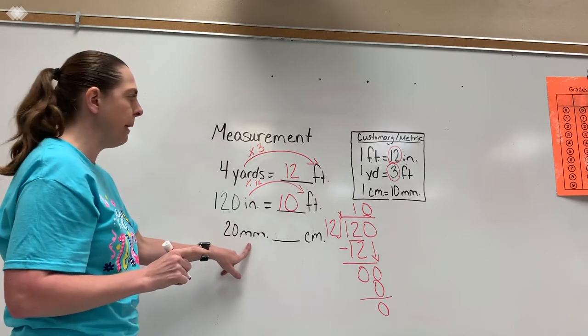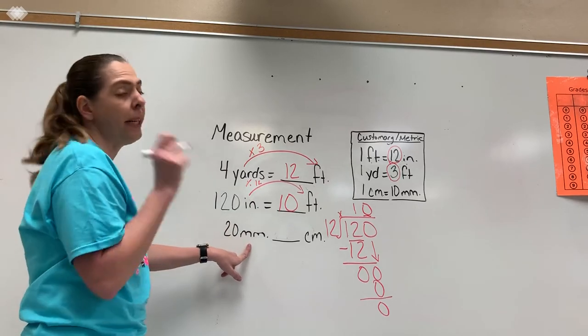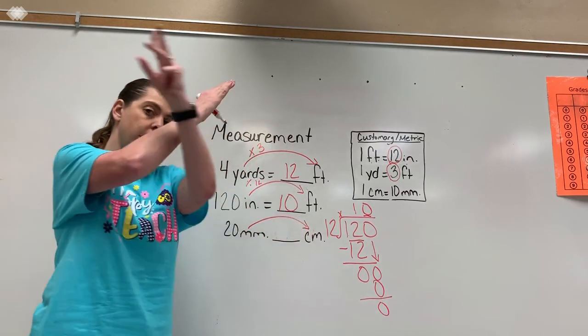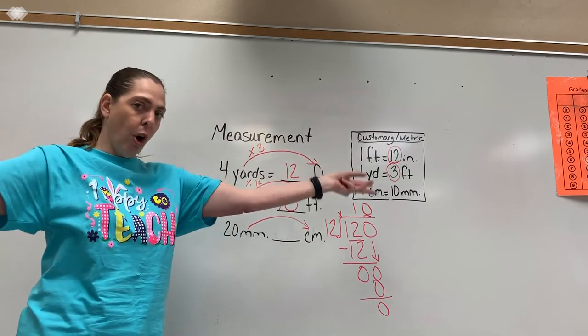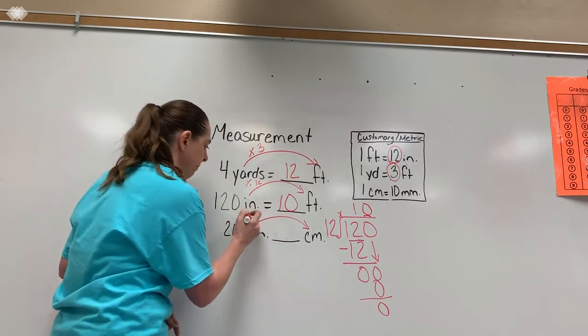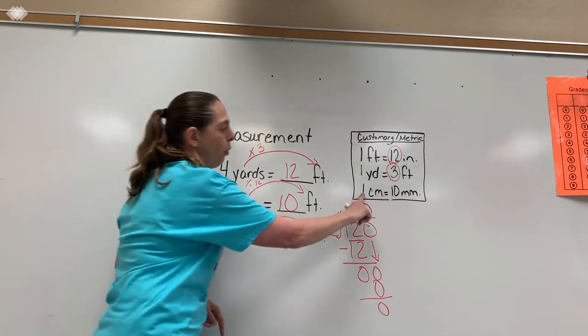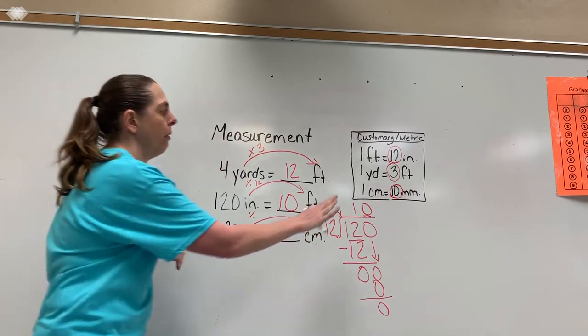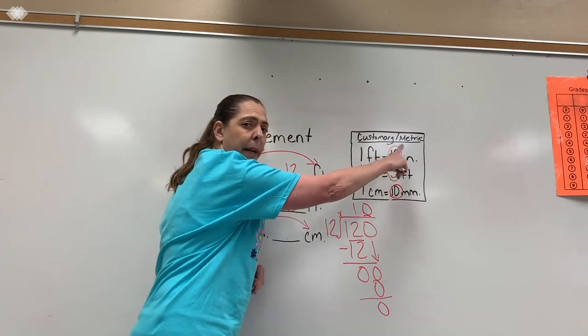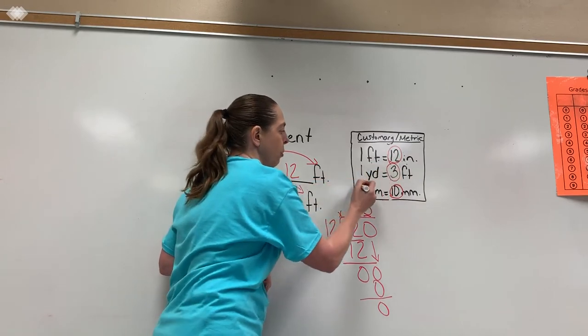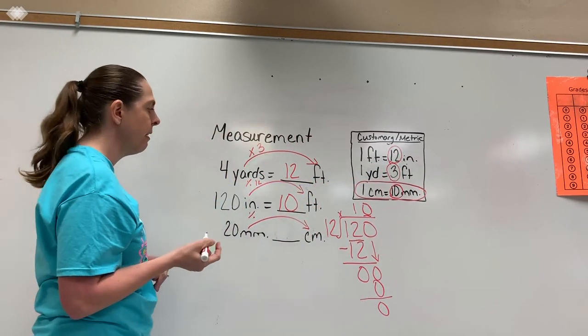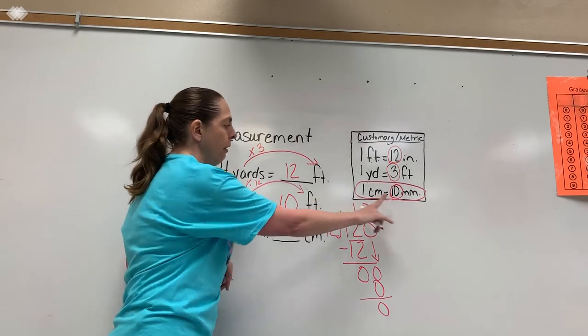Now I've got to go from millimeters to centimeters. Millimeters are tiny, tiny, tiny. So I'm going small to large again. So I'm going to divide. I'm going to come right up here and figure out what I'm going to divide by. So really quickly, this is customary units of measurement. This one here is a metric unit of measurement. We use that in science.